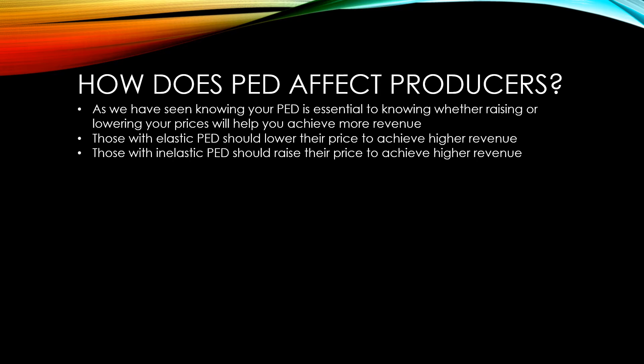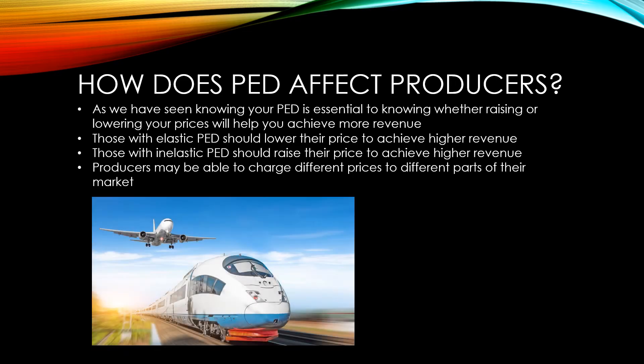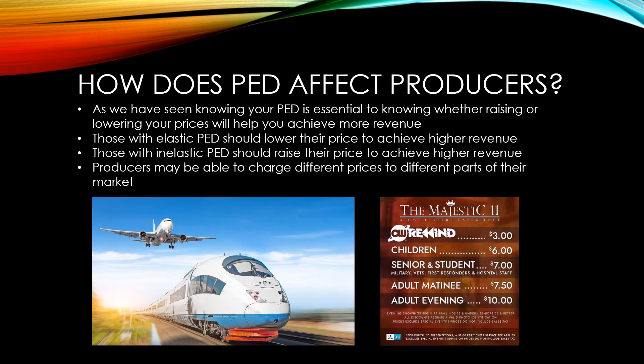Some producers are also able to charge different prices to different parts of their market. For instance, flights and hotels cost less if you can afford to use them outside of the busy school holiday periods. If you catch the train and have to go at work times in the morning, you have to pay a higher fare than those that are more flexible and can travel at off-peak times. A cinema might price tickets differently for children, students and pensioners, or they may even have discounted prices for daytime, also known as matinee screenings.